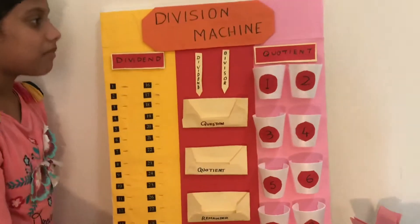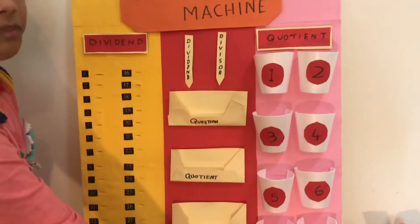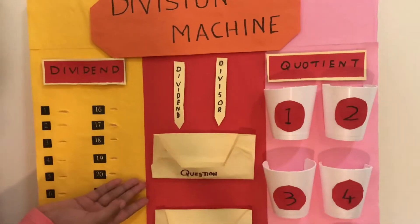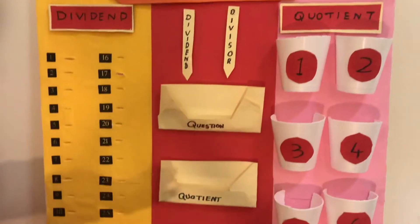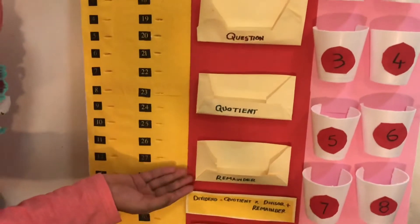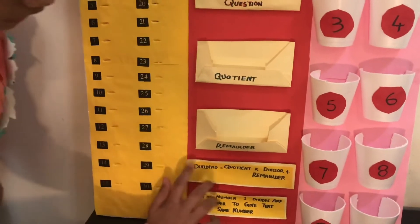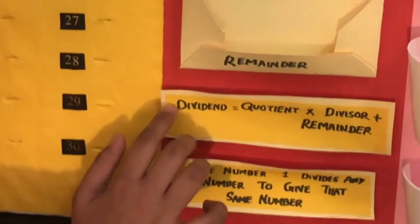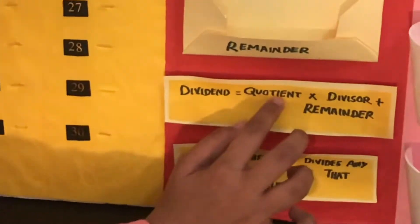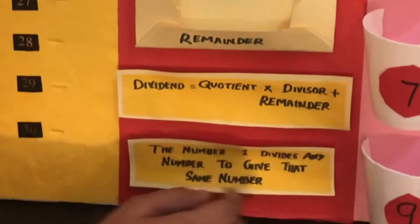I will show you how it works. This is the dividend column and this is the quotient column. This is the question box, quotient box, and this is the reminder box. We have two notes here. Dividend equals quotient multiplied by divisor plus reminder.